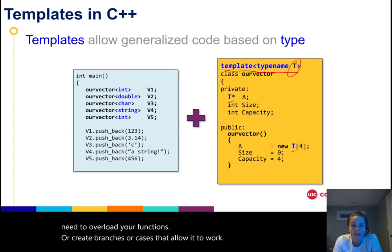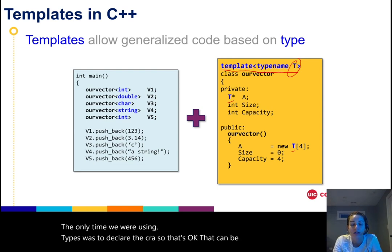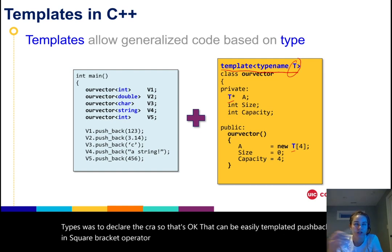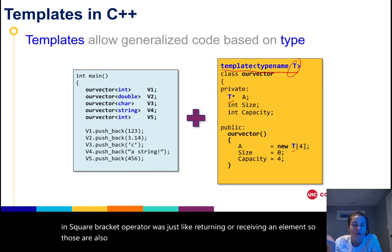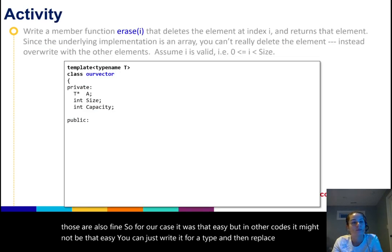In our case, the only time we were using types was to declare the C array, so that's okay. That can be easily templated. Pushback and square bracket operator was just returning or receiving an element. So those are also fine. So for our case, it was that easy. But in other codes it might not be that easy. You can't just write it for a type and then replace all the ints with T's.